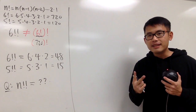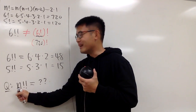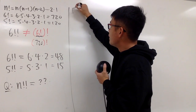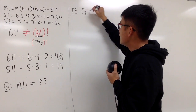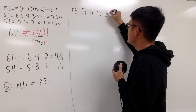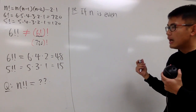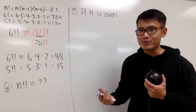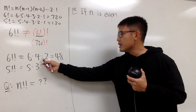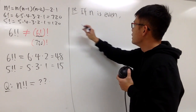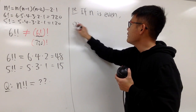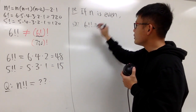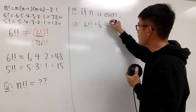We have two cases to consider, because it matters whether n is even or odd. Let's start with the even case. As our example, we have 6 double factorial, which we already know equals 6 times 4 times 2.